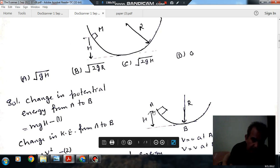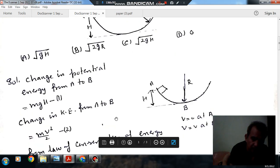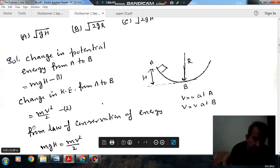from point A to B, the change in potential energy... and suppose V is the velocity at point B. At this point the velocity is zero. The change in kinetic energy... So change in potential energy should be equal to change in kinetic energy, or decrease in potential energy should be equal to increase in kinetic energy.